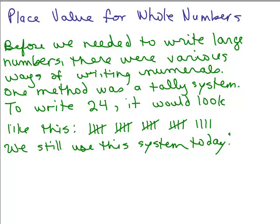Before there was a need to write large numbers, there were various ways of writing numerals. One was the tally system. For instance, to write the number 24, we have this tally you see right here. Most of you are probably familiar with this — this would be 5, another 5, another 5, another 5, that's 20 plus 4 more strokes. So this was made up of these little symbols and you could easily read that as 24.